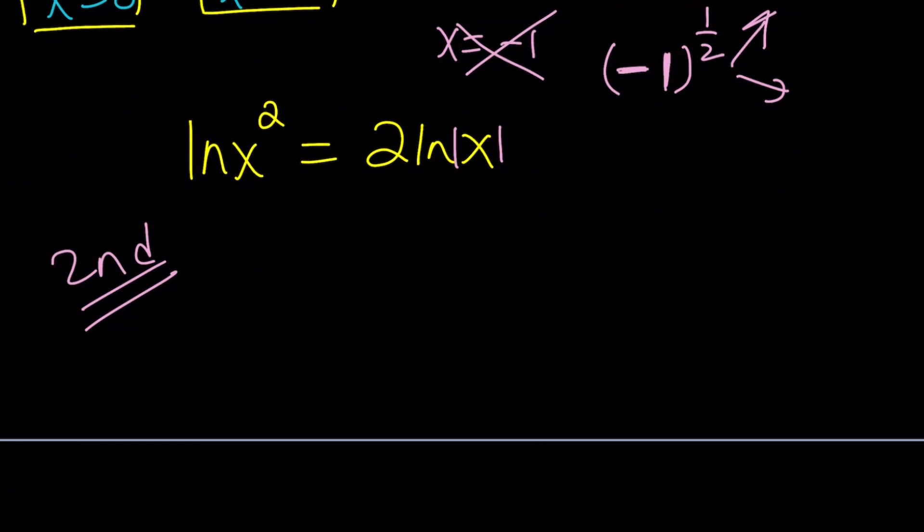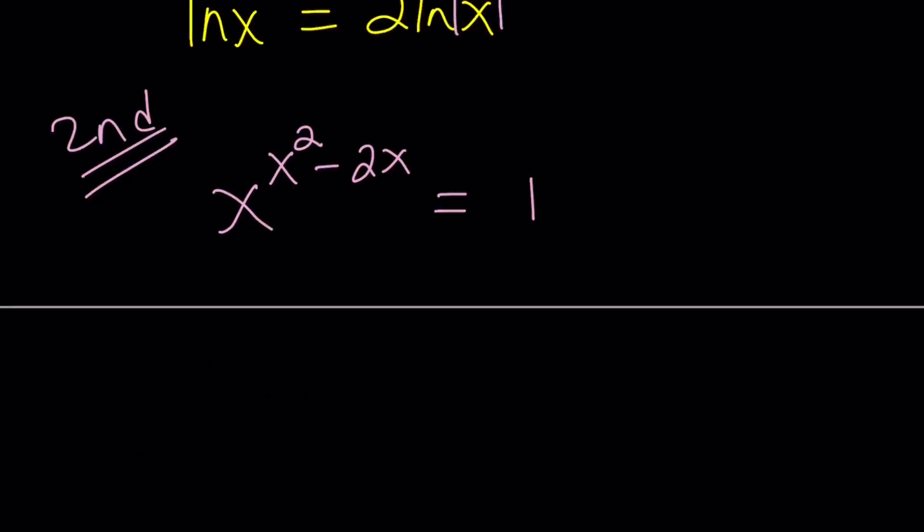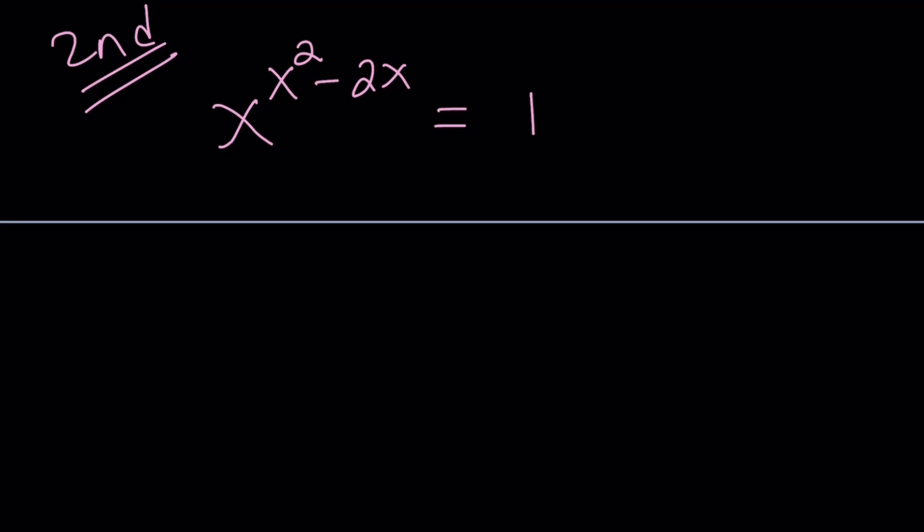So, we have an interesting exponential equation. x to the power x squared minus 2x equals 1. Great. We're going to split this up into cases. And we're going to look at each case separately. This is kind of a general approach, especially if you expect integer solutions. It looks like with the first method, we found all integers. We didn't find any non-integers. So, this should be good.